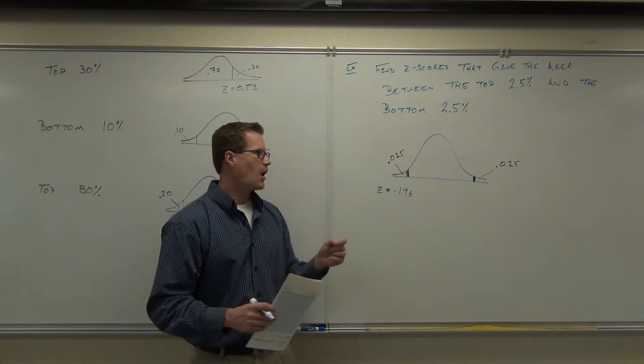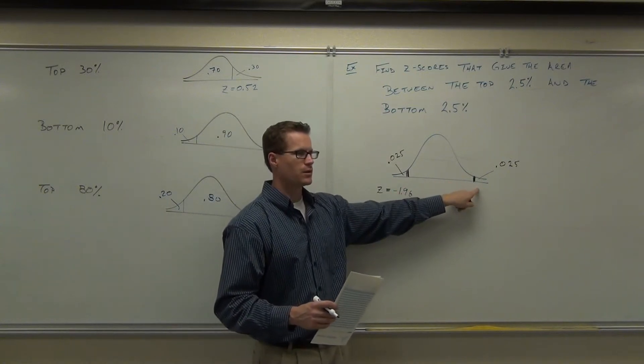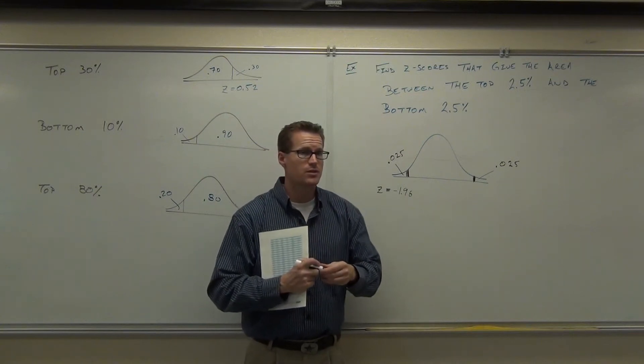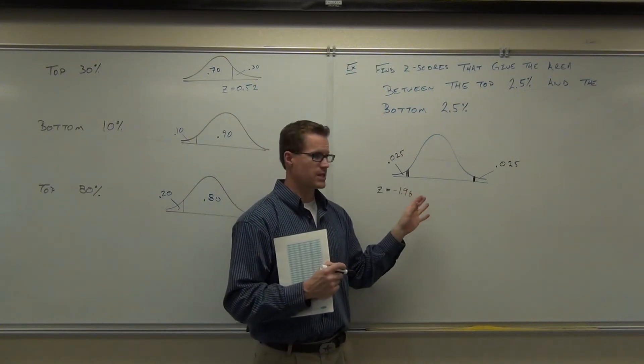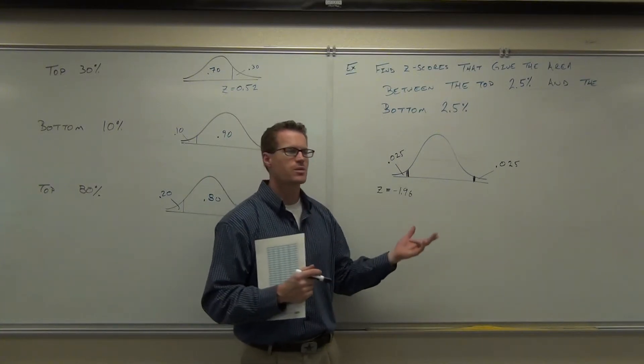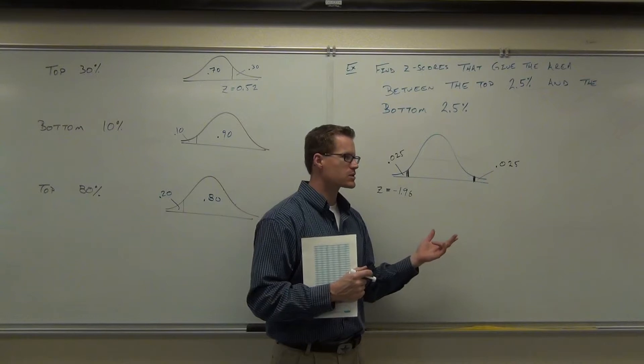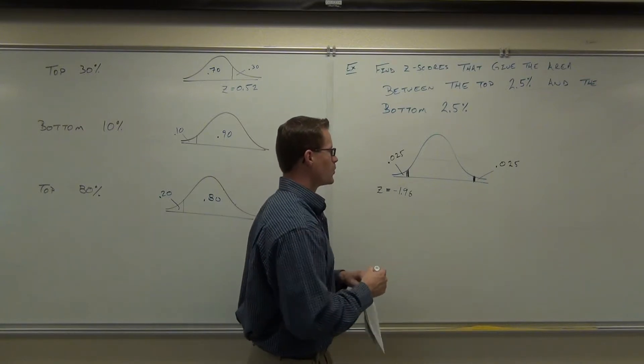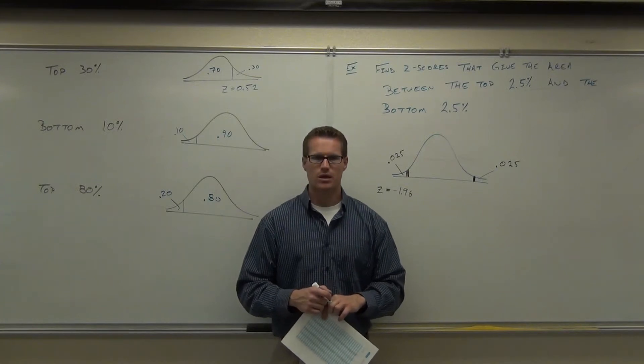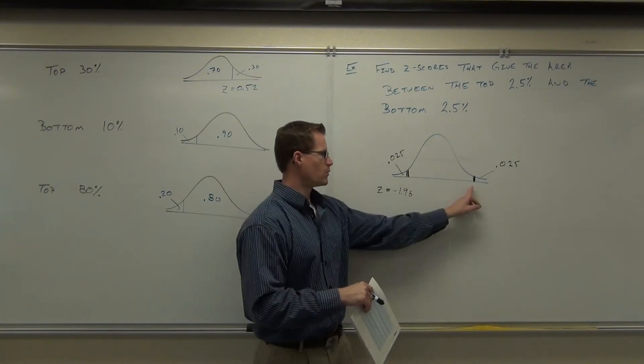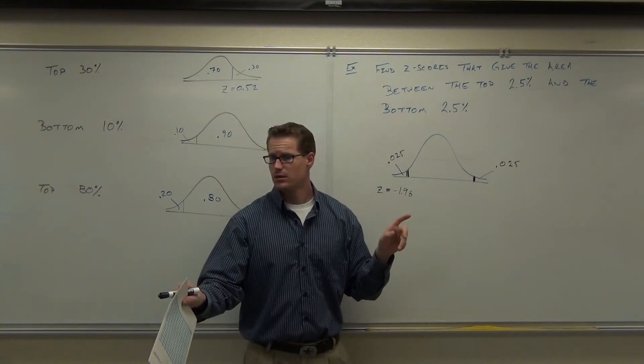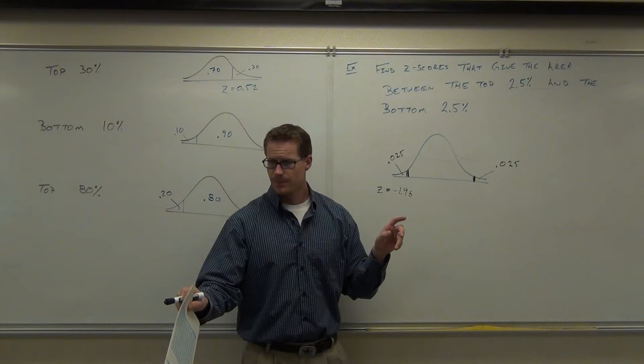Now, the question is, how in the world do I find this one? Well, wait a second. There's actually two methods. Either you outsmart the table and you kind of think about what the shape of this is, or you have to look something up. Now, let's do the look something up first. If I had to look something up, what would I look up? What's the area to the left of this point? How'd you get that? I took 0.025 minus 1.